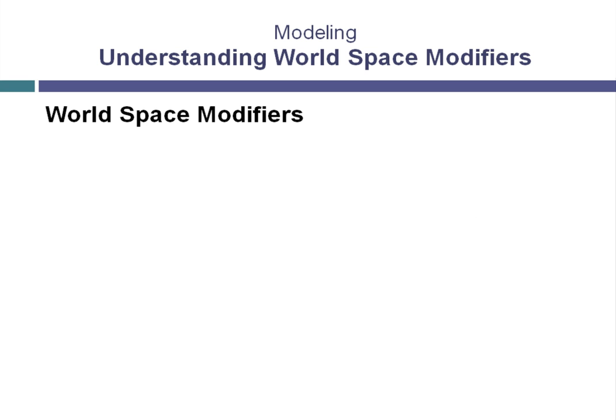Let's take a look at a different type of modifier called a world space modifier. The modifiers that we've used so far have acted directly on the objects themselves. If we should move those objects in space, the effect of the modifier does not change at all. The object's orientation in space has no effect on what the modifier is doing to the object. World space modifiers, on the other hand, distort or modify the space that an object exists in.